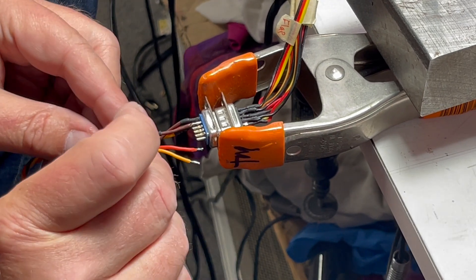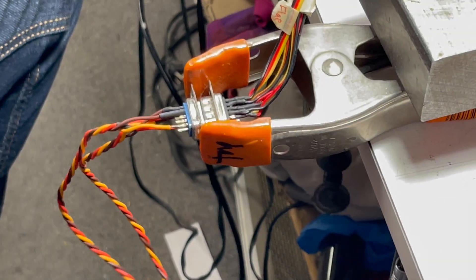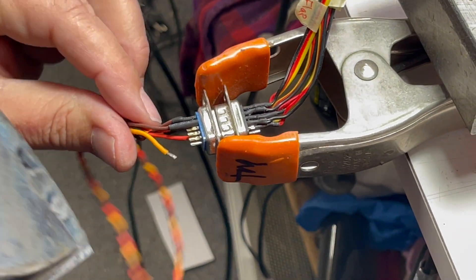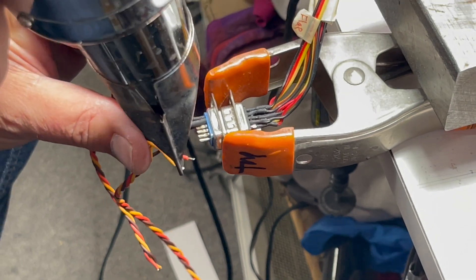Now what I can do is I can simply just push the shrink wrap forward and then what I like to do, since the next one I kind of want to get some space, so I like to shrink this one here first with the heat gun.